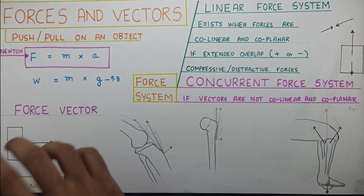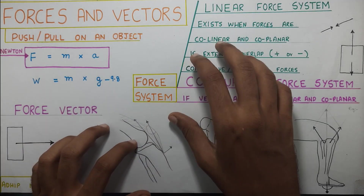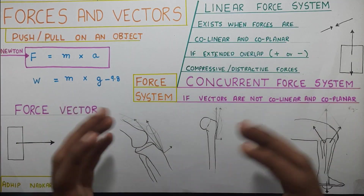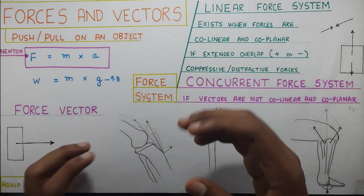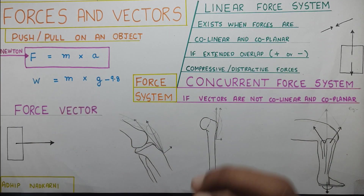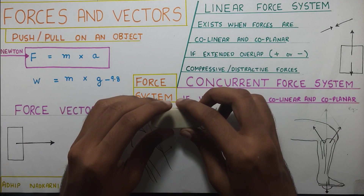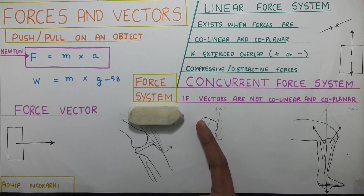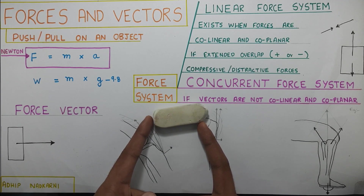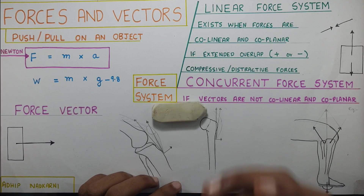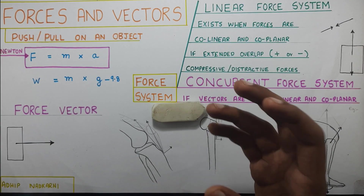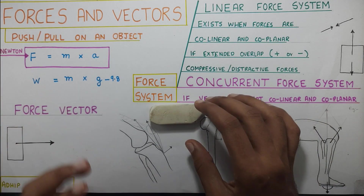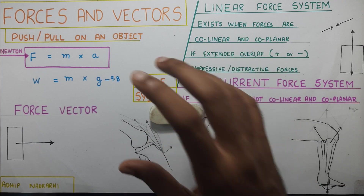So let's look at the force system. When there is more than one force involved in the system, we use the force system to find out what exactly the final force on that object would be. If one person is pushing a rubber in one direction, another in another direction, and a third in yet another direction — where will the rubber go in the end? That is what we are talking about when there is more than one force in the picture.